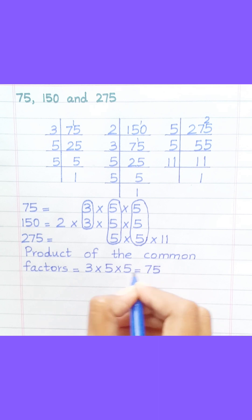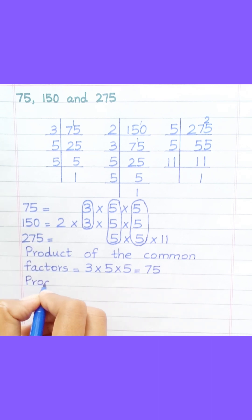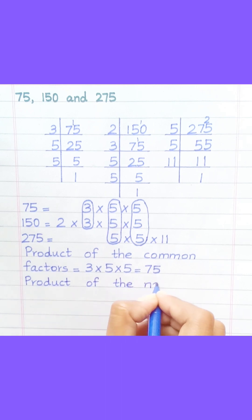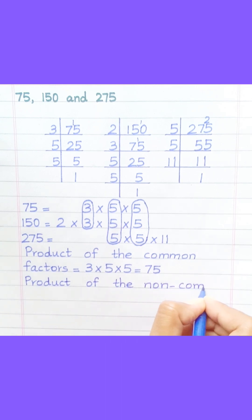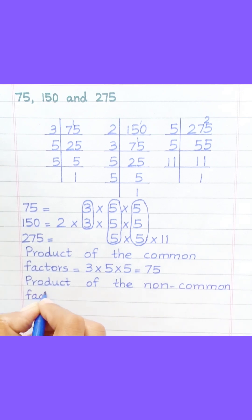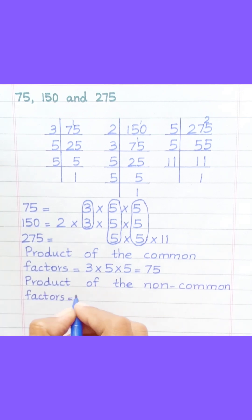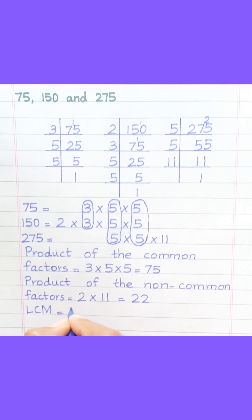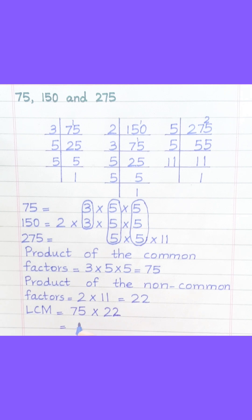Equal 75. 75 multiply 5 multiply 5 multiply 5. Product of the non-common factors equals 2 multiply 11, equal 22. LCM equals 75 multiply 22, equal 1650.